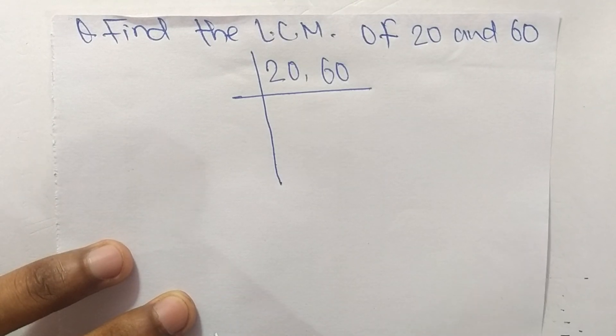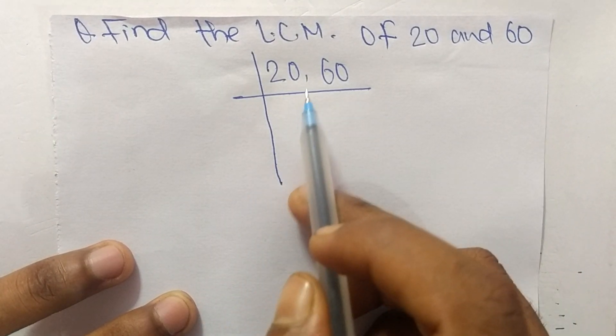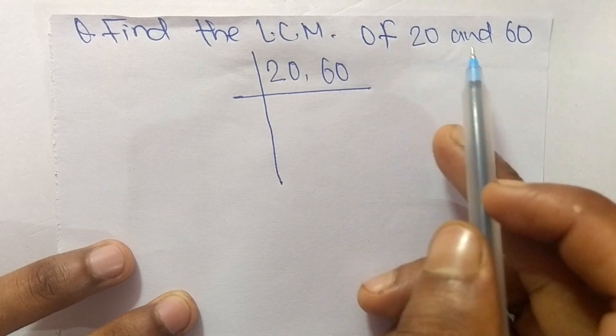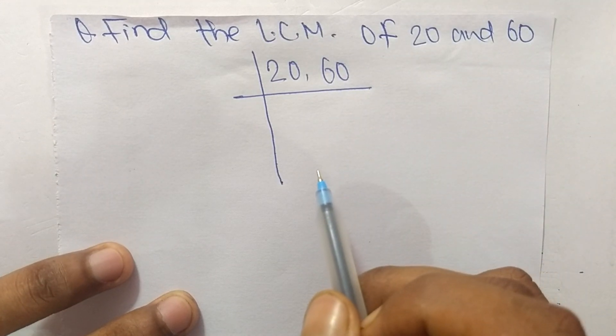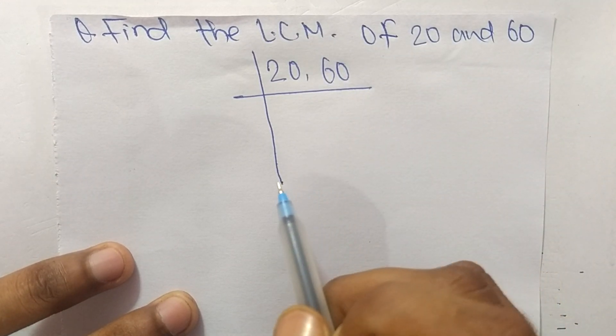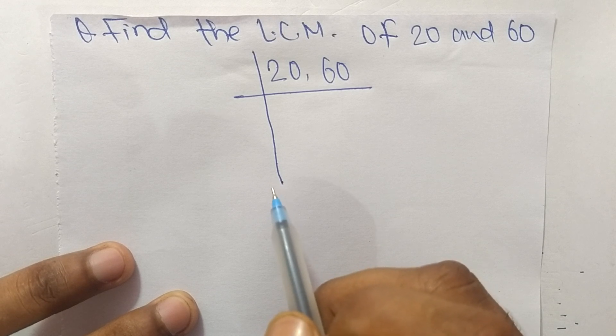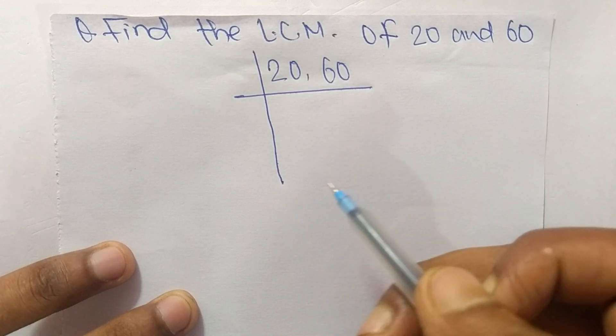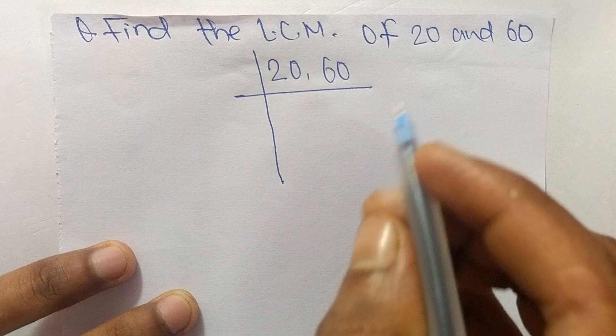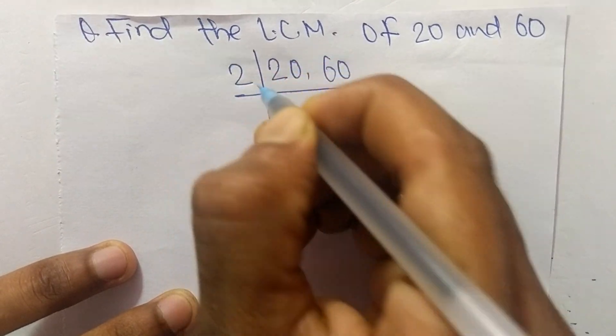Today in this video we shall learn to find the LCM of 20 and 60. To find LCM, first we have to choose the lowest number that can exactly divide 20 and 60. The number is 2.